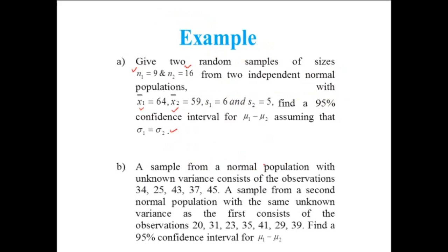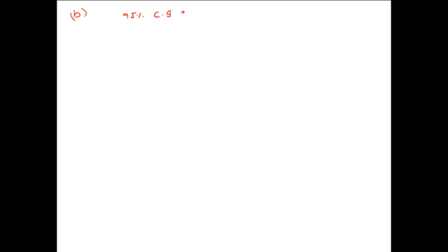Another example: Sample 1 from population 1: 34, 25, 43, 37, 45 (n1 = 5). Sample 2 from population 2: 20, 31, 23, 35, 41, 29, 39 (n2 = 7). Find the 95% confidence interval for the difference of means mu1 minus mu2 using the formula: (x-bar1 − x-bar2) ± t_alpha/2,(n1+n2−2) × sp × √(1/n1 + 1/n2). All calculations are needed: mean1, mean2, sp, and t value.